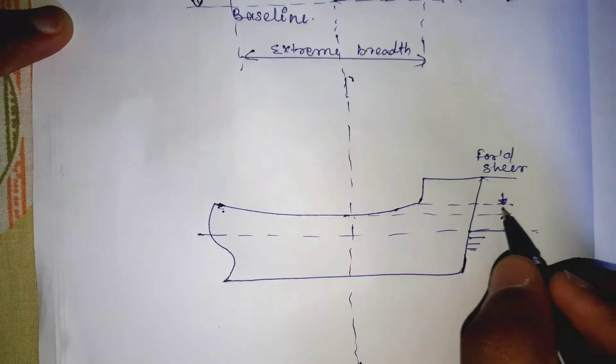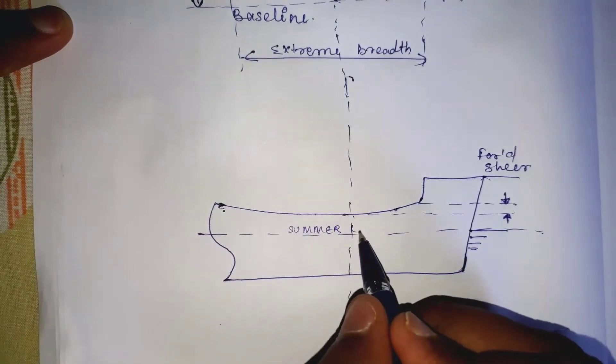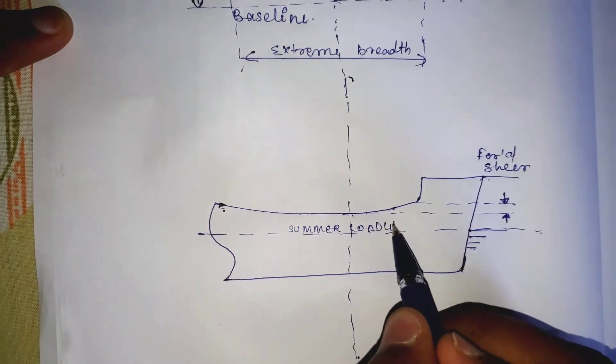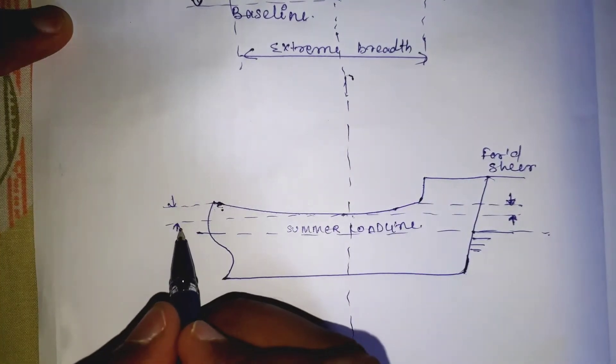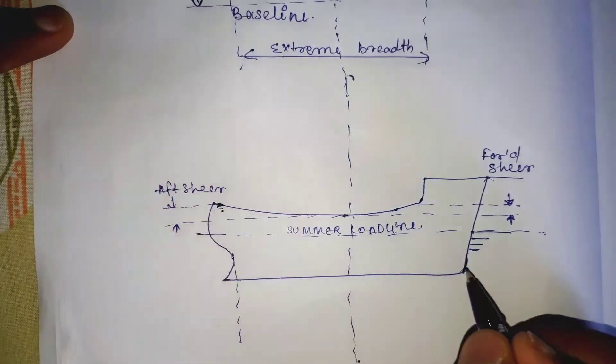As you can see in this figure, you can see the forward shear and the aft shear of the ship. Now we will see the aft perpendicular and forward perpendicular.